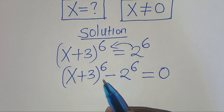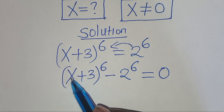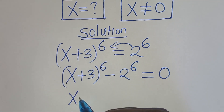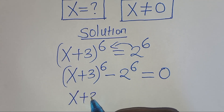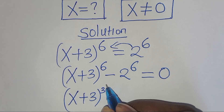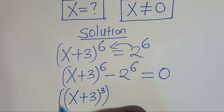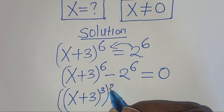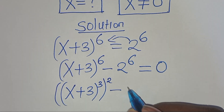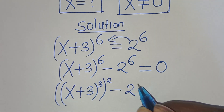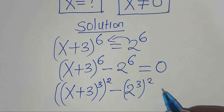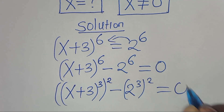The next step is to express x plus 3 to the power of 6 as x plus 3 raised to the power of 3, and then raised to the power of 2. Subtract 2 to the power of 6, which is the same thing as 2 to the power of 3 raised to the power of 2. This is equal to 0.